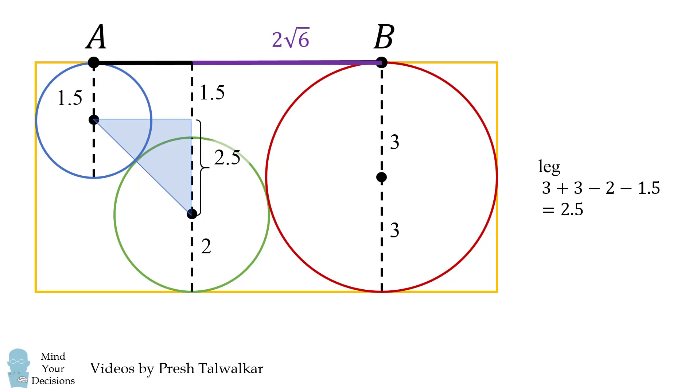Now the hypotenuse will be the sum of the radii, so it will equal 1.5 plus 2, which is 3.5. Now we'll figure out the other leg of this triangle using the Pythagorean theorem. This will equal to the square root of the quantity 3.5 squared minus 2.5 squared. And this simplifies to be the square root of 6.